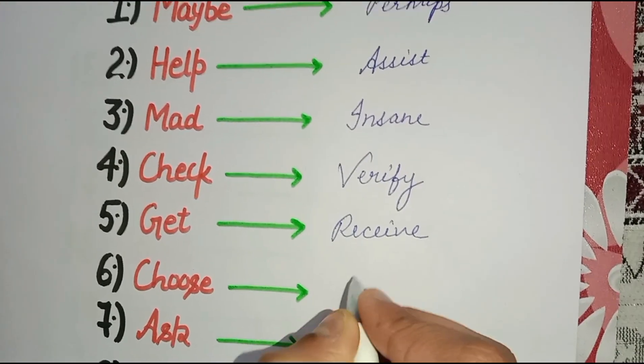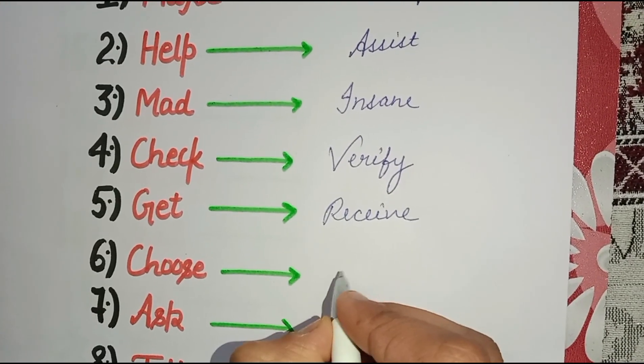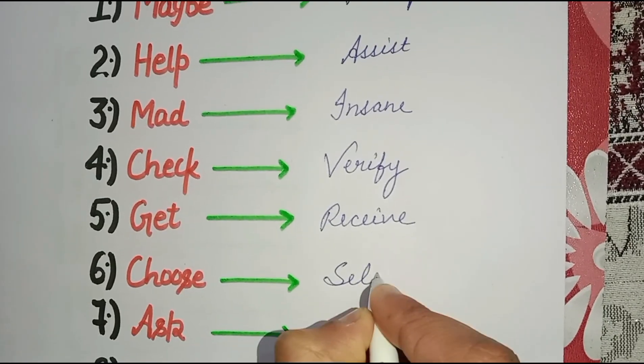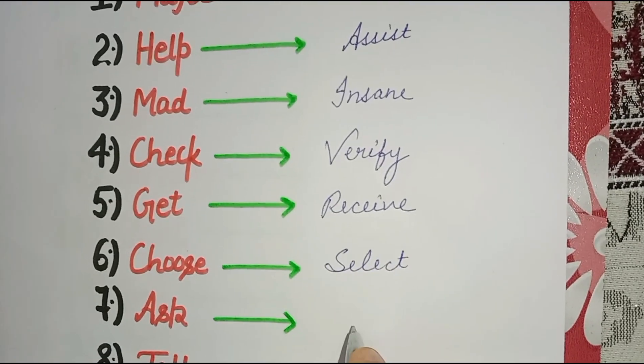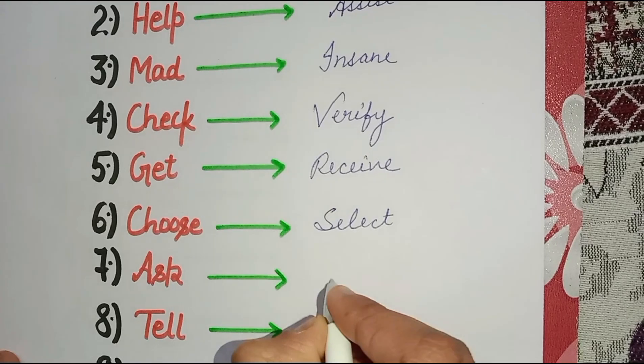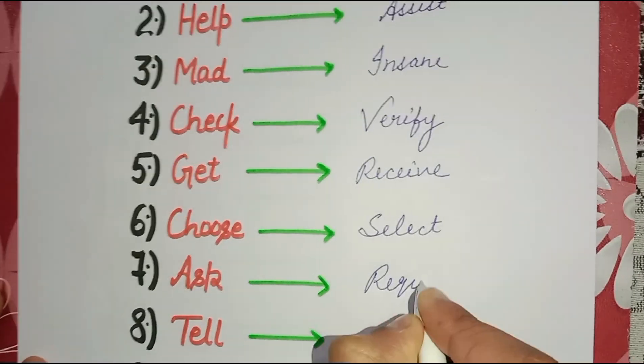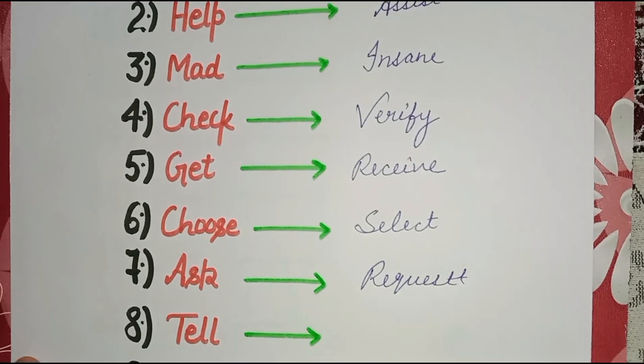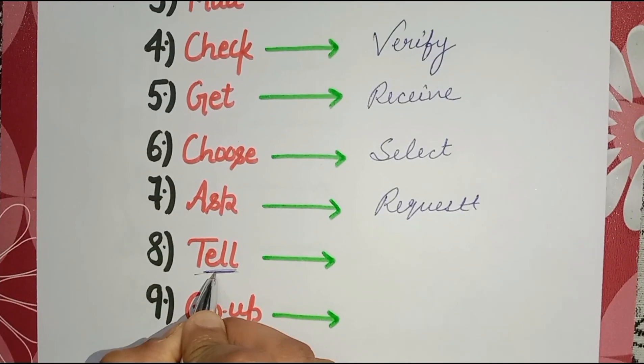Next is 'choose', but you have to say 'select'. 'Ask' becomes 'request'. The informal one is 'tell', but you have to say 'inform'.